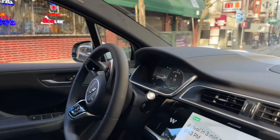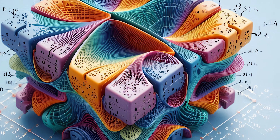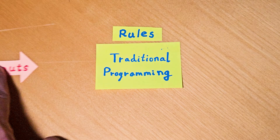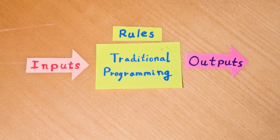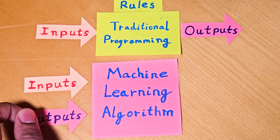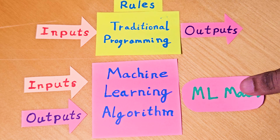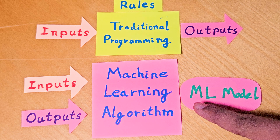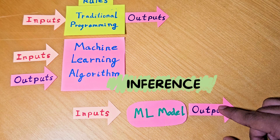AI and ML is not just self-driving cars and chatbots — in fact, it's much more than that. Anytime we run a mathematical model to make a prediction or a decision, we are using ML. In traditional programming, we give the rules and the inputs, and it spits out the outputs. Whereas with a machine learning algorithm, we give both the inputs and the outputs, and it spits out the rules that relate the inputs to the outputs — also called an ML model — which is later used for running an inference where we give in the inputs and it provides the outputs.